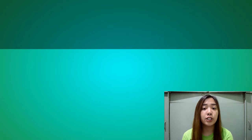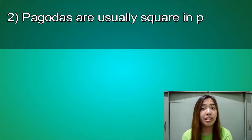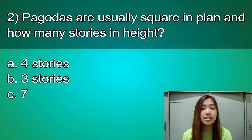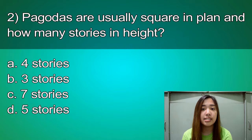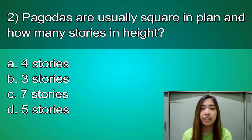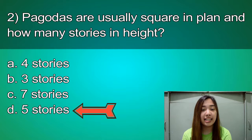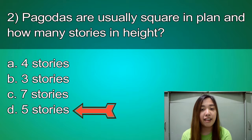Pagodas are usually square in plan and how many stories in height? Is it A. 4 stories, B. 3 stories, C. 7 stories, or D. 5 stories? You have five seconds to answer. Time's up. The correct answer is D. 5 stories.